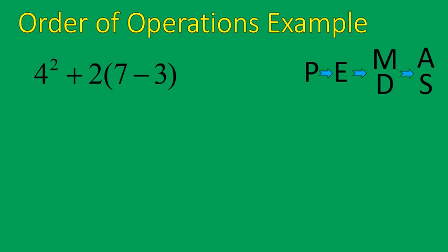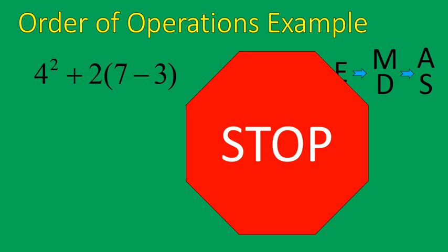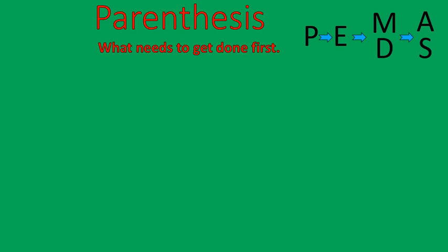Let's do another order of operations question. 4 to the power of 2 plus 2 times the quantity of 7 minus 3. Whoa! What is that? And that's what we're going to talk about next. This is our parentheses. Parentheses are just grouping symbols, those brackets or parentheses that show us what needs to get done first.